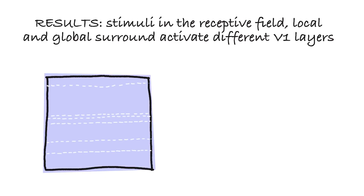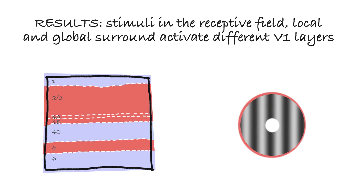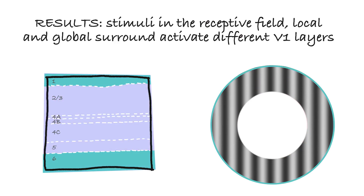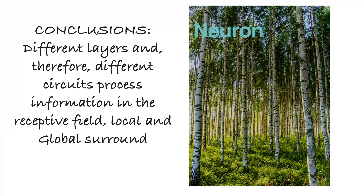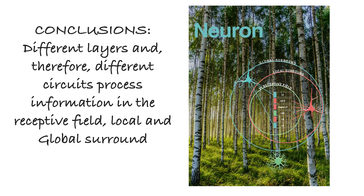We found that stimuli inside the receptive field, local and global surround activated different V1 layers. In response to the small stimulus inside the receptive field, layer 4C was activated first. Local surround activated layers 2-3, upper layer 4, and layer 5 first. In response to the stimulus in the far surround, layers 1 and 6 were activated first. Consistent with our hypothesis, these results strongly suggest that inputs from the LGN carry visual information to the receptive field, long-range horizontal connections within V1 carry the visual information from the near surround to the V1 column, and feedback connections from higher visual areas carry visual information from the far surround.